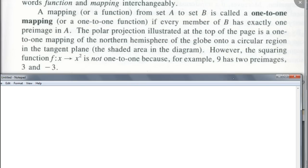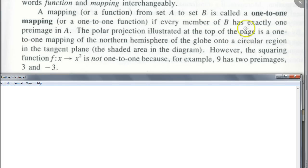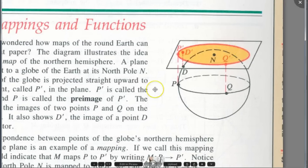The polar function illustrated at the top of the page is a one-to-one mapping of the northern hemisphere of the globe onto a circular region in the tangent plane — the shaded area of the diagram. However, the squaring function f(x) = x² is not one-to-one because, for example, 9 has two pre-images: three and negative three. So what kind of mapping is the hemisphere projection? They're saying this is a one-to-one mapping. Why is this one-to-one mapping?